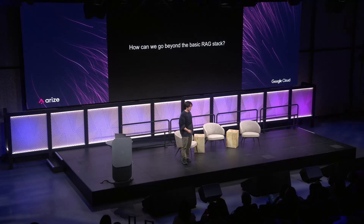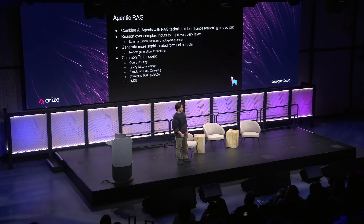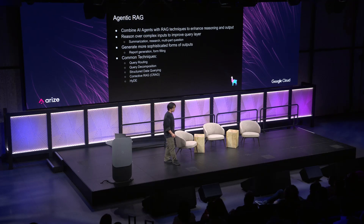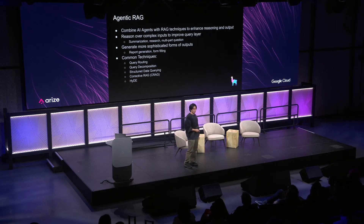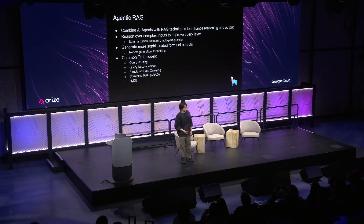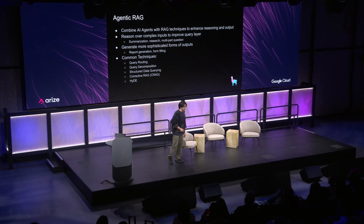So how can we go beyond the simple RAG stack? In comes agentic RAG. The world is becoming ever more agentic, and agents are going to be a core piece of many Gen AI applications. Agentic RAG simply combines AI agents with a variety of RAG techniques to enhance reasoning and output. As we see more complex inputs — summarization, research, multi-part questions — we can leverage LLM reasoning capabilities to improve the overall query layer.